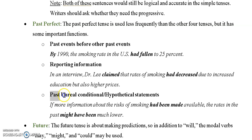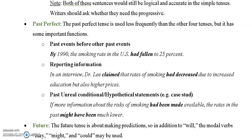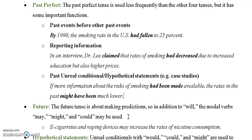A third function of the past perfect is past unreal hypothetical statements using 'would,' 'could,' or 'might.' For example: 'If more information about the risks of smoking had been made available, the rates in the past might have been much lower.' These are not too common but can be used in case studies, discussing or writing about a situation that happened in the past and imagining what might have happened if something else had been the case.